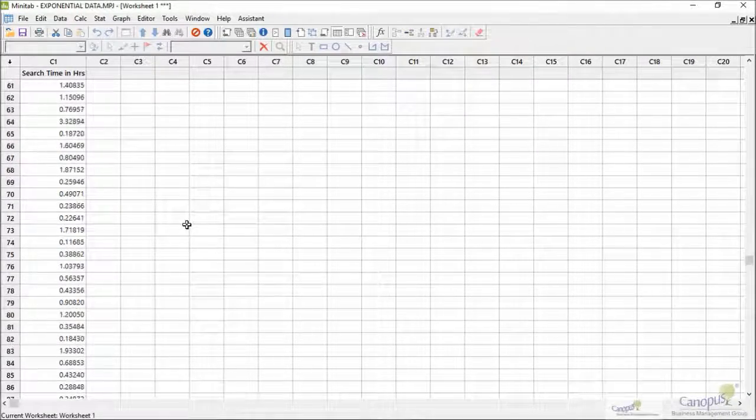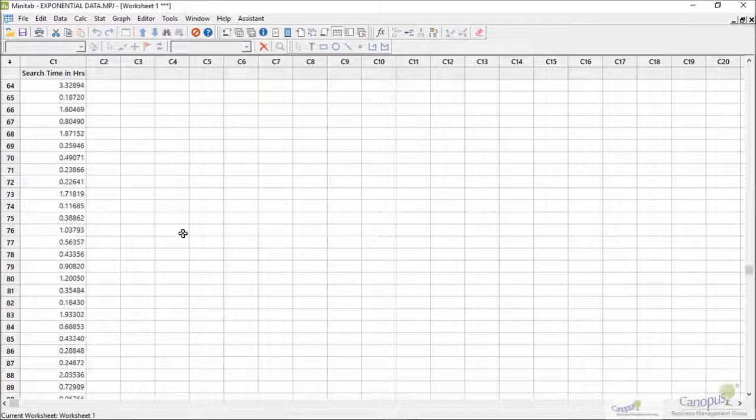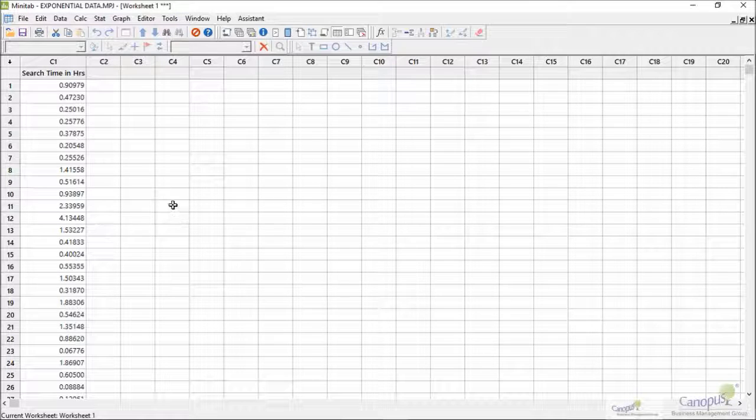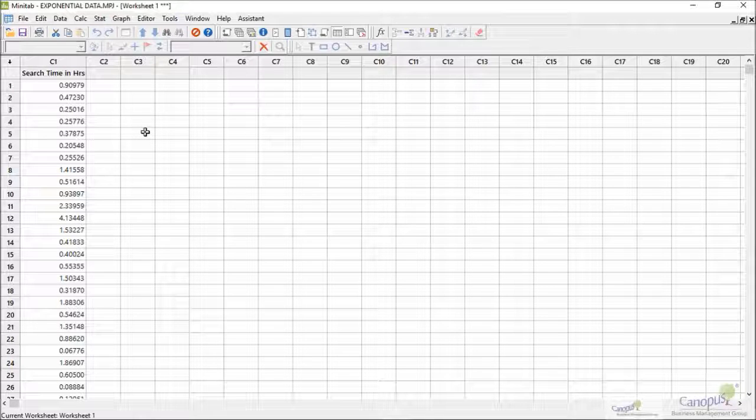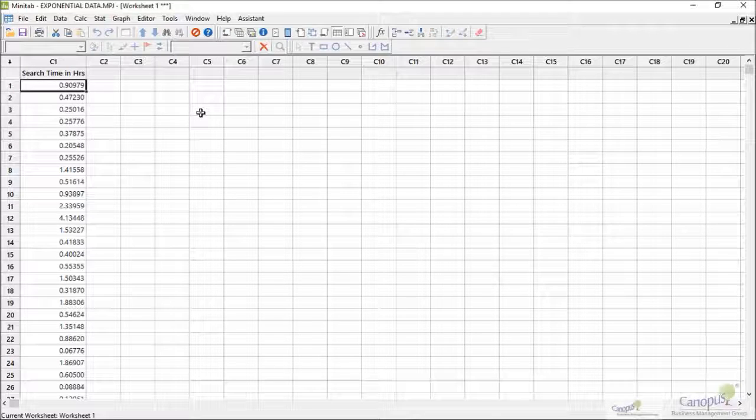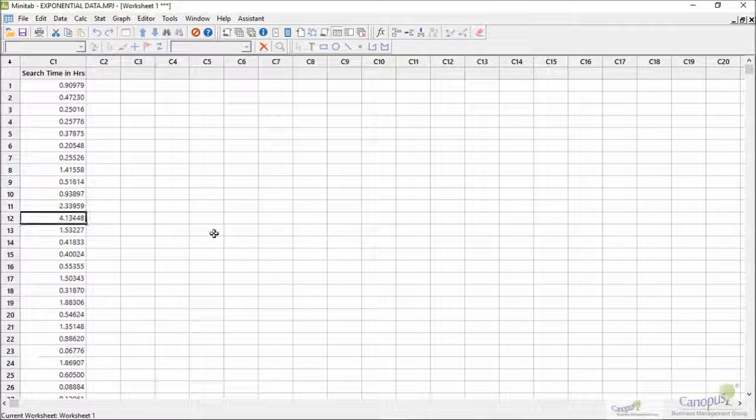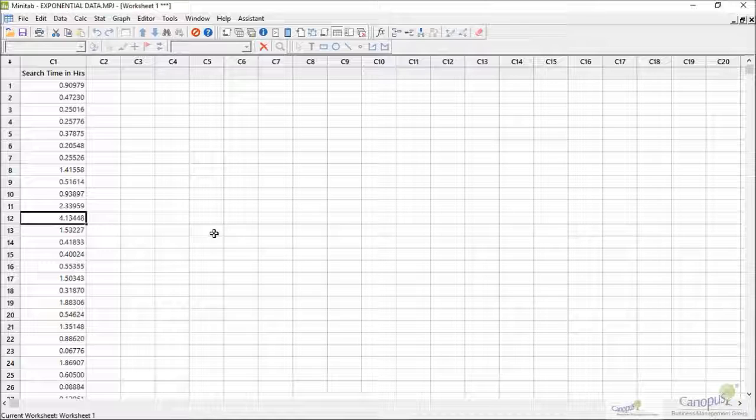Here is this data. We have around 100 data points, and it is the time that it takes to search and find a book in a library, measured in hours. We have values as low as 0.06 hours—I can spot on the screen, there could be even lower values—and as high as four hours.